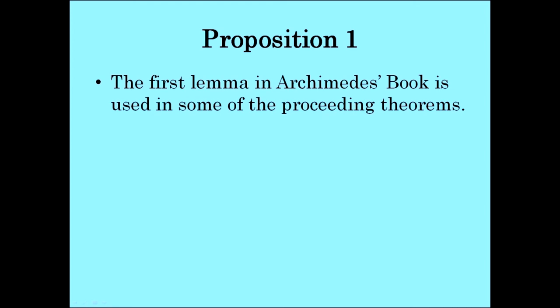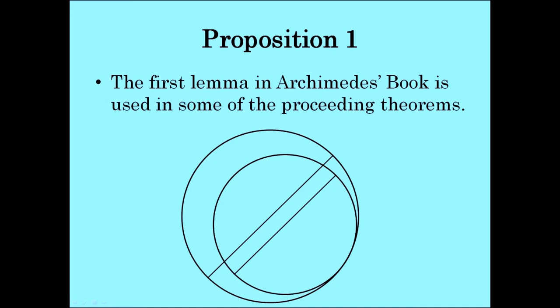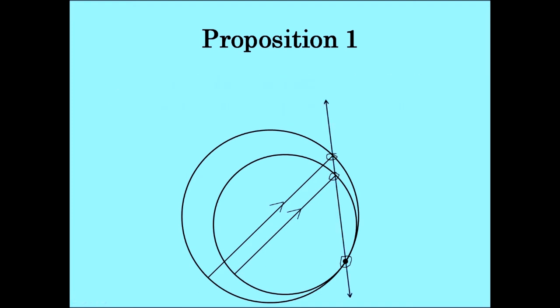The first lemma in Archimedes' Book of Lemmas is used in some of the following theorems, so I figured we should go over it. Let's say we have one large circle and its diameter right here. And let's say we have a smaller circle with its own diameter, and they meet at a certain point. What Proposition 1 actually states is that if these two diameters are parallel to each other, then we can actually declare these three points to in fact be collinear. This Proposition 1 is occasionally used in the theorems later on in Archimedes' Book of Lemmas.